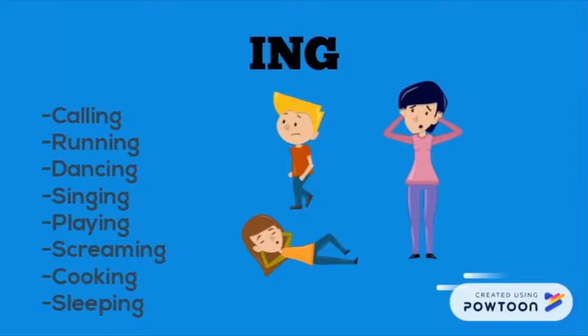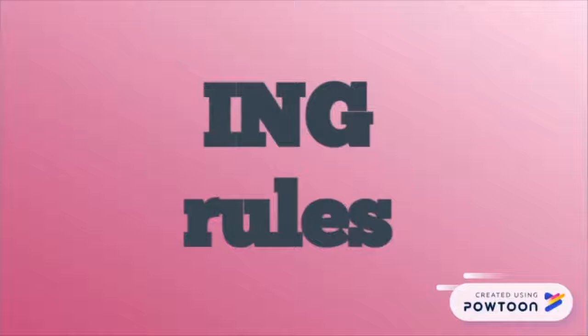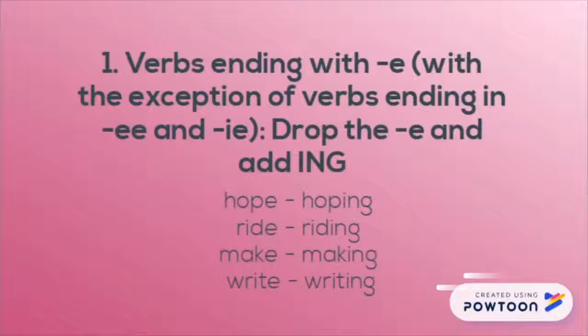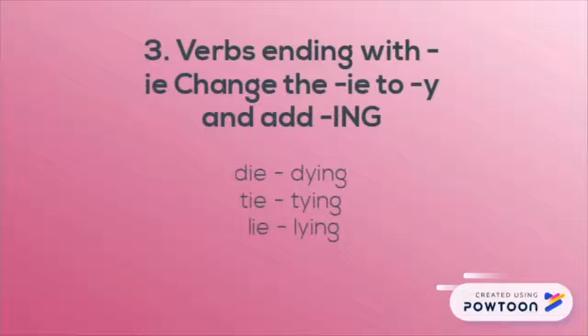We have the '-ing' form. This describes an action in the present participle, like: calling, running, dancing, singing. Rule 1: verbs ending with '-e', with the exception of verbs ending in '-ee', drop the '-e' and add '-ing'. Rule 2: verbs ending with a vowel-consonant, just add '-ing'. Rule 3: verbs ending with '-ie', change the '-ie' to '-y' and add '-ing'.